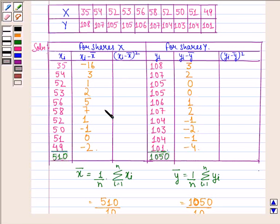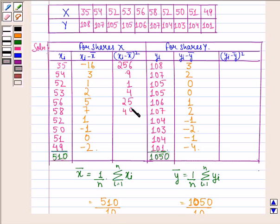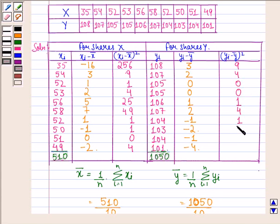Now we find the squares of these deviations. For share X: the square of minus 16 is 256, square of 3 is 9, square of 1 is 1, then 4, 25, 49, 1, 1, 0, and 4. For share Y: square of 3 is 9, square of 2 is 4, then 0, 0, 1, 4, 1, 4, 1, and 16.